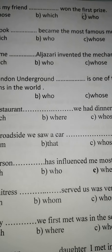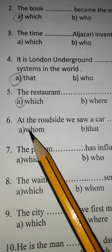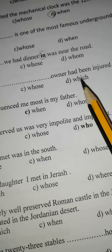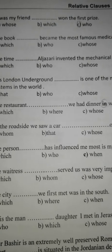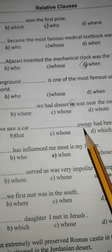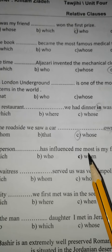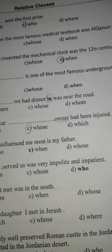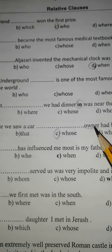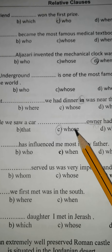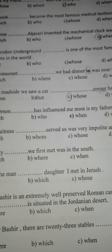هاي الجملة مش موجودة في الكتاب بس أنا حبيت أنبه لهاي المعلومة. At the roadside we saw a car whose owner had been injured. A car — شيء — لكن عندي owner بعدها اسم، فدايماً بين اسمين بحط whose. The car whose owner had been injured.